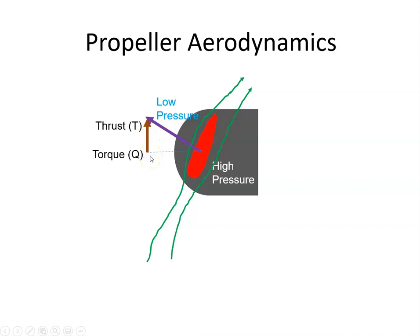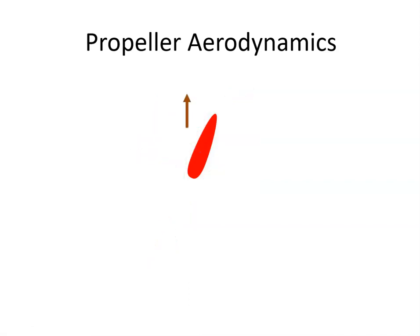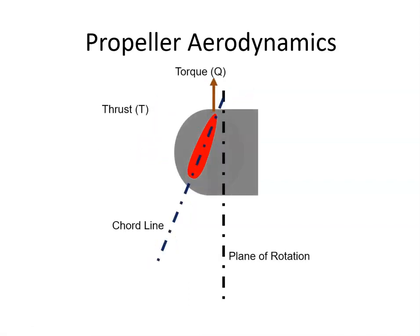Normally, the thrust and torque will be shown like that. So we have the thrust here and the torque at this position.